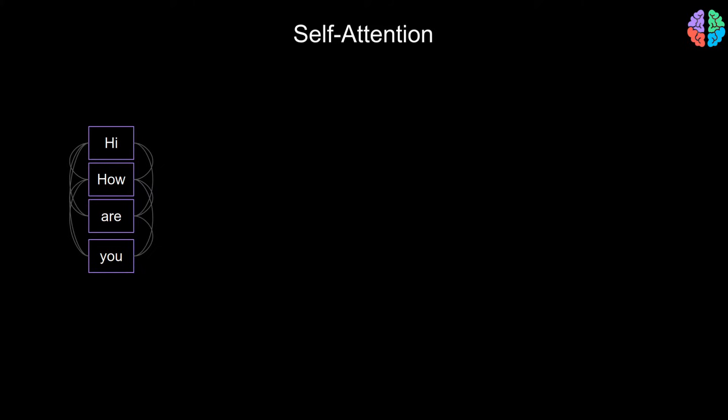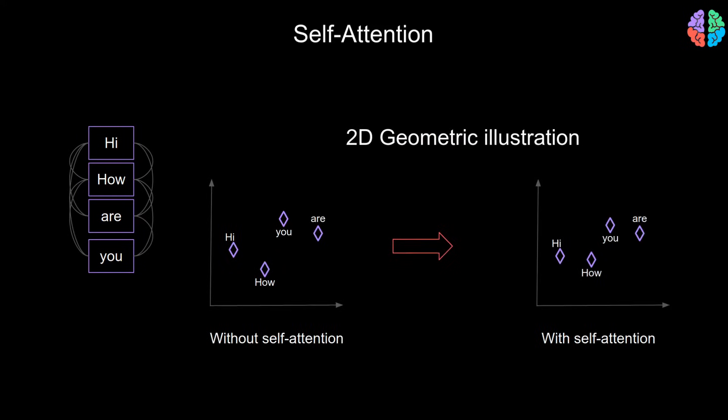If you're more of a visual person, then this could probably be a geometric illustration of self-attention. On the left is without attention, but on the right we can see the result of applying attention. The representations have moved slightly closer together because each word is influenced by the neighboring word, and this is a naive case where the feature dimensions is just two.